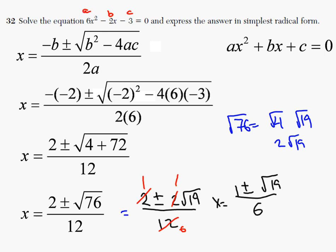So x equals 1 plus or minus radical 19 over 6. Okay, thank you for watching. I hope that helps. Take care.